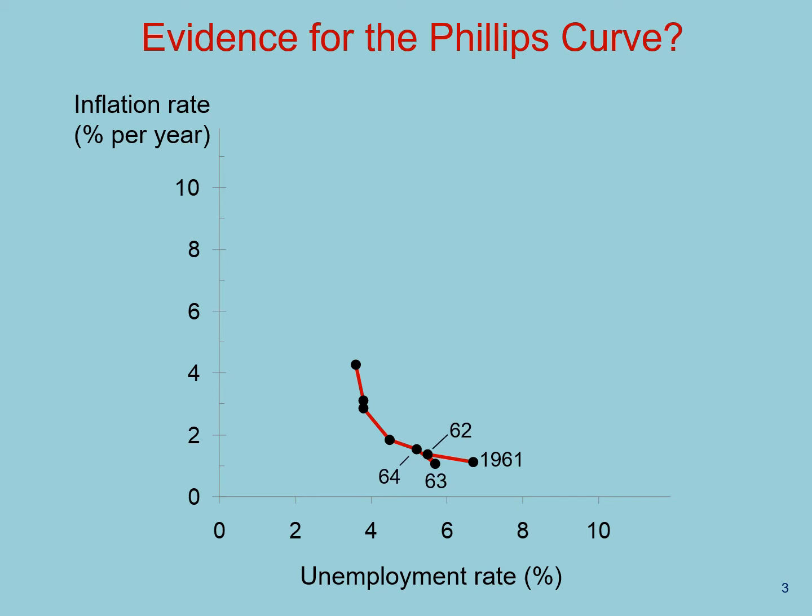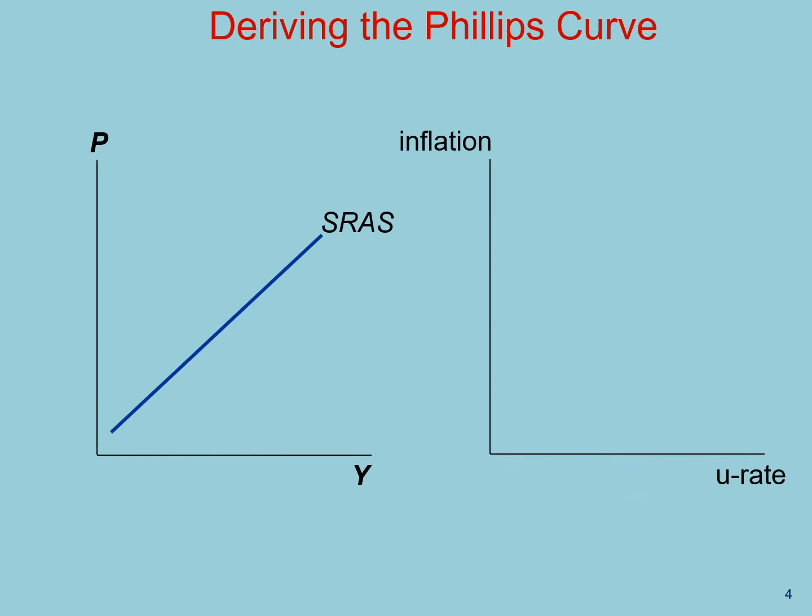During the 1960s, the data supported the idea of the Phillips curve. During that era, fiscal policy was expansionary, in part to finance the Vietnam War. To keep interest rates low, the Fed made monetary policy expansionary as well. As a result, aggregate demand grew over the 1960s, tracing out an almost perfect empirical relationship between inflation and unemployment.